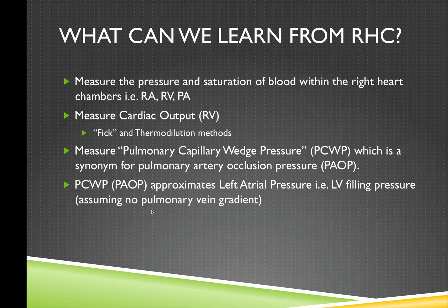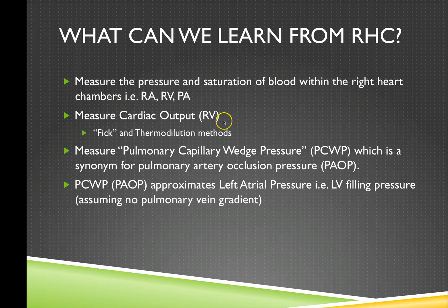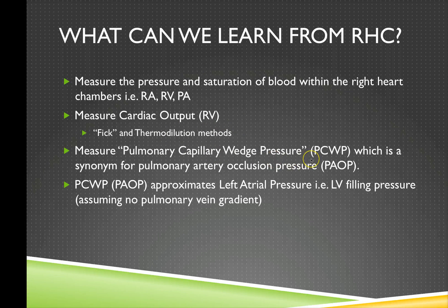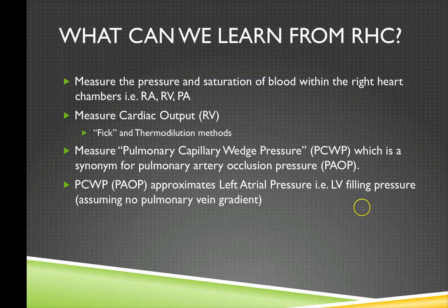It allows us to measure the pressure in various chambers of the right heart — for example the right atrium, the right ventricle, and the pulmonary artery. It allows us to measure the cardiac output, specifically right ventricular cardiac output, but in the absence of any shunt the right ventricular cardiac output should equal the left ventricular cardiac output over time. It also allows us to measure the pulmonary capillary wedge pressure, or pulmonary artery occlusion pressure, which approximates left atrial pressure — the most important determinant of left ventricular filling pressure, assuming no pulmonary vein gradient.